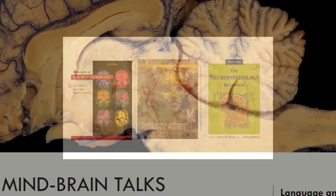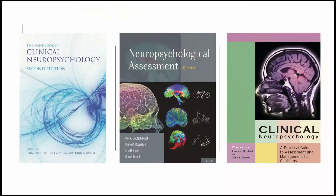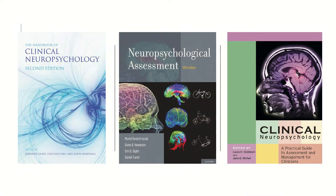The first is the Principles of Neuropsychology, the second is the Fundamentals of Human Neuropsychology, the third is the Neuropsychology Handbook, the fourth is the Handbook of Clinical Neuropsychology, second edition, the fifth is the Neuropsychological Assessment, fifth edition by Muriel Lezak, and the sixth is the Clinical Neuropsychology by Laura Gunstein and Jane McNeil.